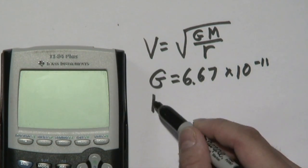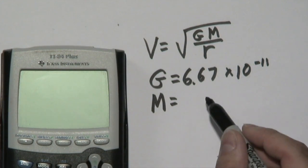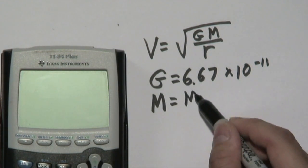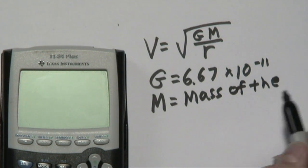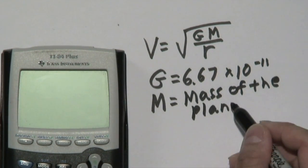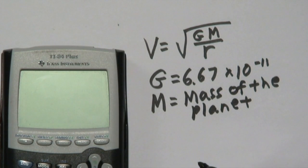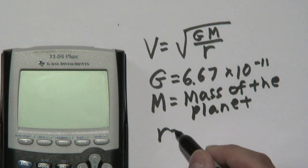Now what's going to vary is the letter M, which is the mass of the planet. That could be any planet. A lot of folks tend to use Earth because we use a lot of Earth-related applications, but what's also important is r.